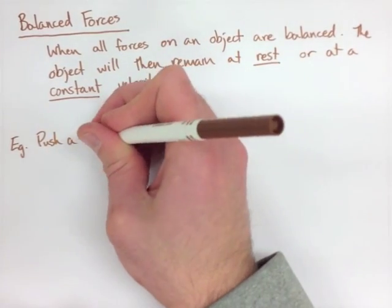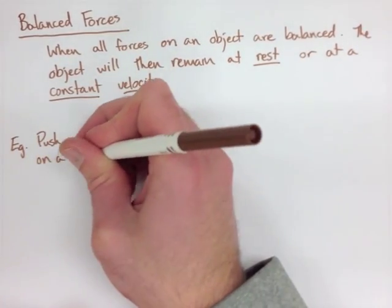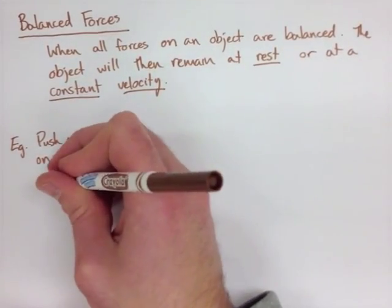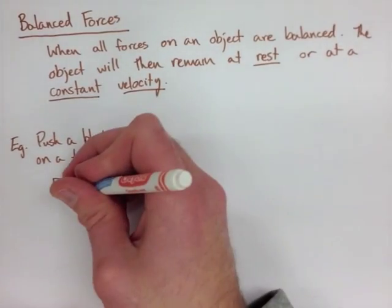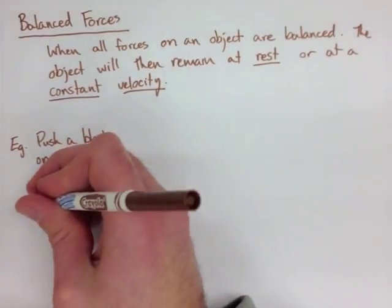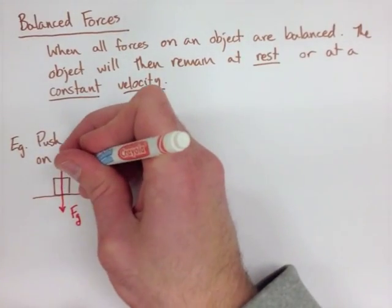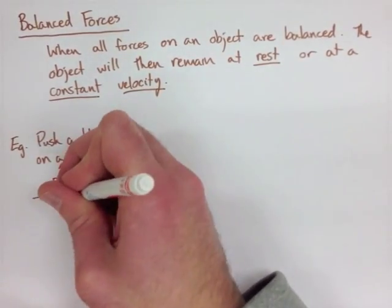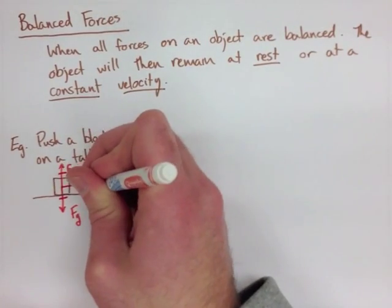Now, looking at the first example on the next page, we're pushing a block across a table, but the important thing to notice here is we're at steady speed. So we have the force of gravity down, because it's in contact with the table, we have the normal force, and these forces are equal.